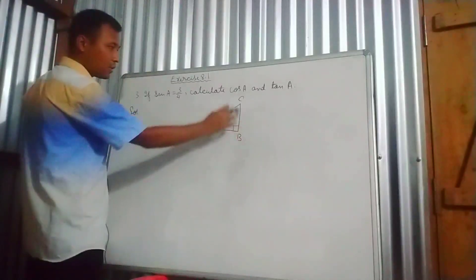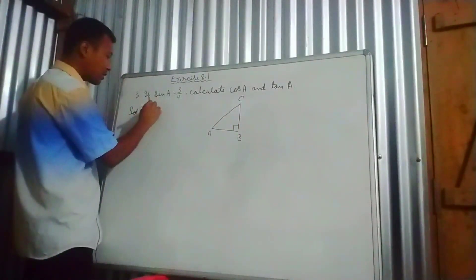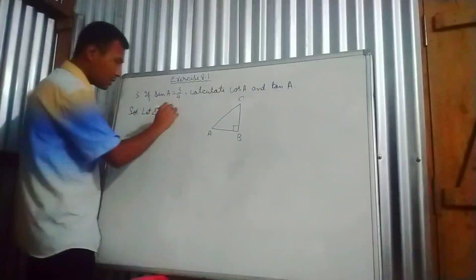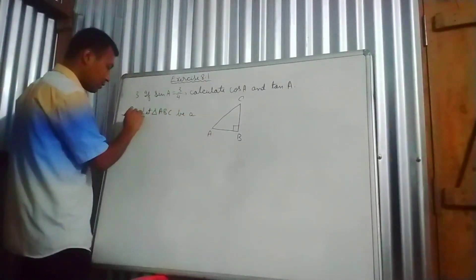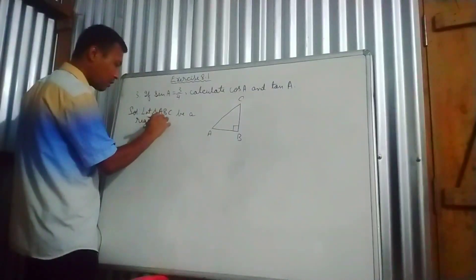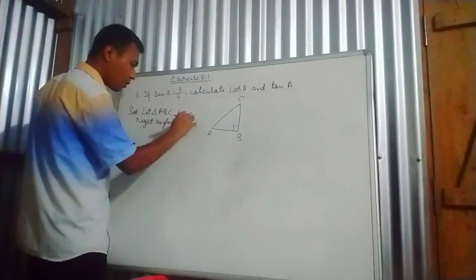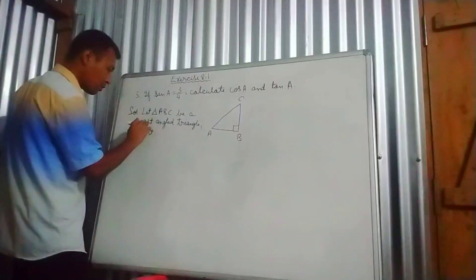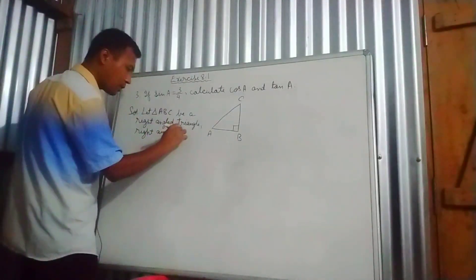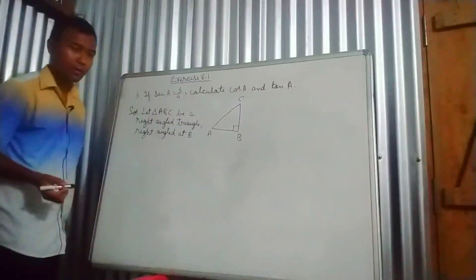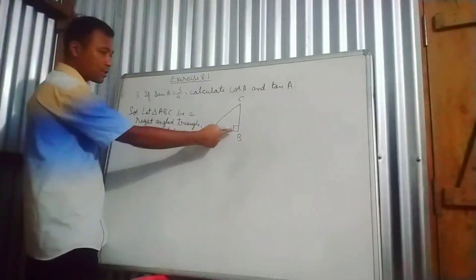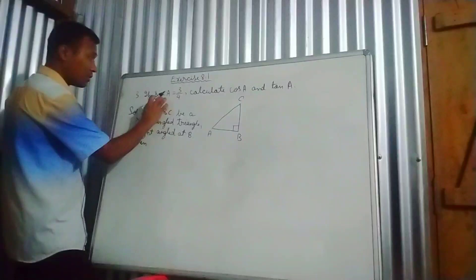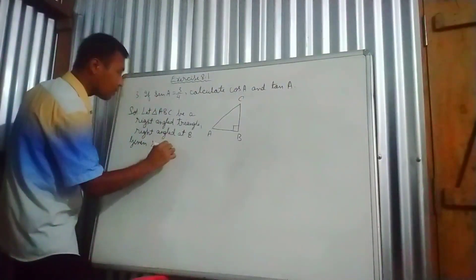I have drawn the figure of triangle ABC. It is right angle at B. Let triangle ABC be a right angle triangle. What is given here? It is given that sin A is equal to 3 by 4.